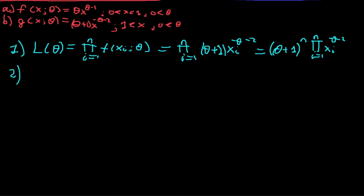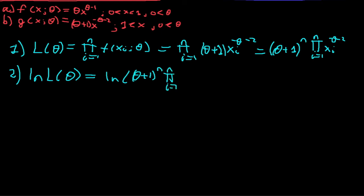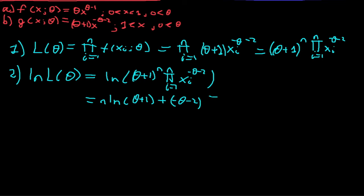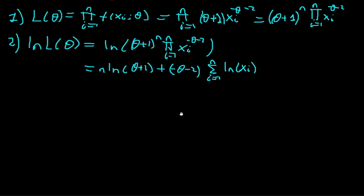We now find the value of theta that maximizes this function. Since the function is differentiable, we take the natural log of the likelihood function, which does not change the maximizing value of theta. The log-likelihood equals n times the natural log of theta plus 1, plus minus theta minus 2 times the sum from i equals 1 to n of the natural log of xi. If this log-product conversion step is unclear, it will be explained at the end of the video.